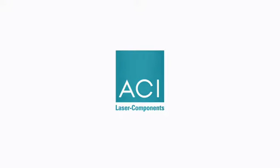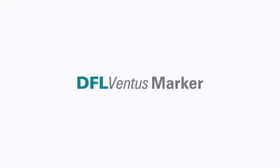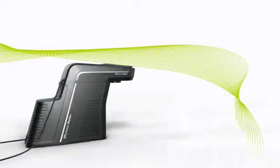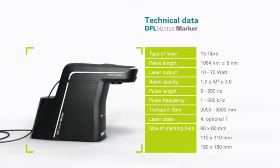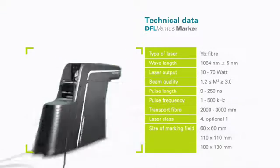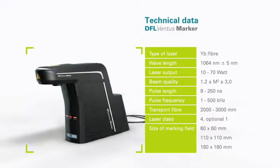The DFL series fiber laser systems are ideal for industrial use for processes with critical cycle times. The DFL Ventus marking system opens up new opportunities for customers of ACI Laser GMPH in the field of marking metal.